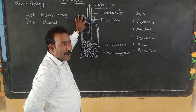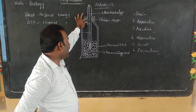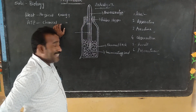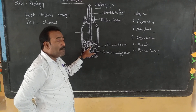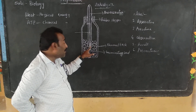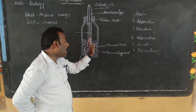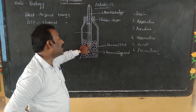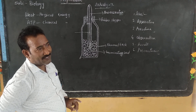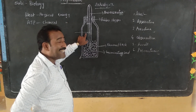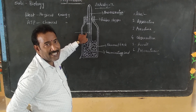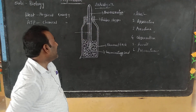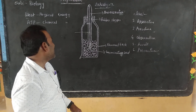Precautions: First, the mouth of the thermoflask must be kept airtight by applying grease and wax around the mouth of the thermoflask. Second precaution: the bulb of the thermometer must be covered by the germinating seeds. These are the precautions to demonstrate that heat is released during the process of respiration.